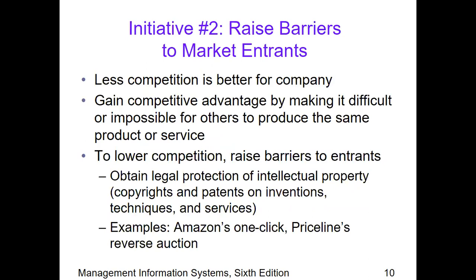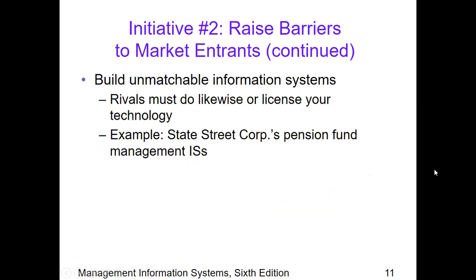Barriers include legal protection of intellectual property, making it impossible for others to use that particular IP. We also have to build unmatchable information systems — these are not available to anybody else, or they are sold by one company to be used solely by contracted entities. Rivals must do likewise or license the technology.